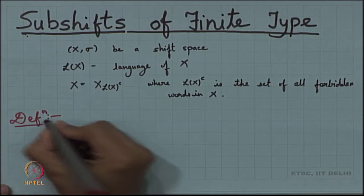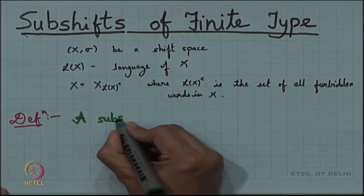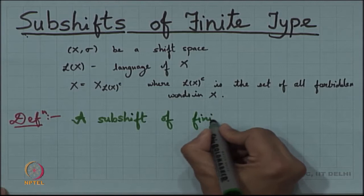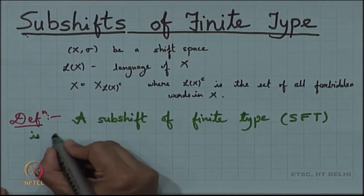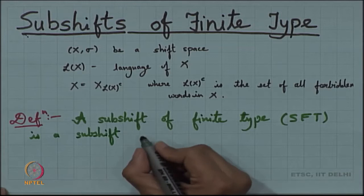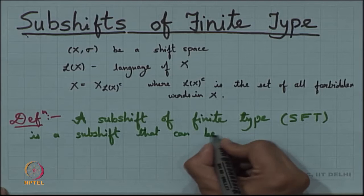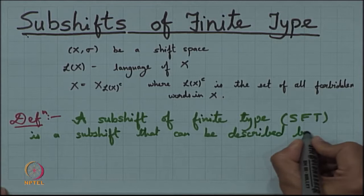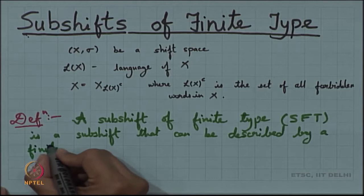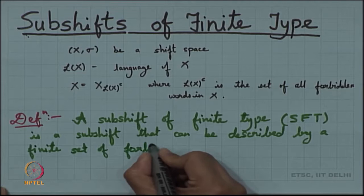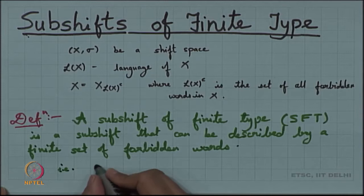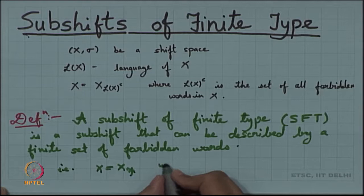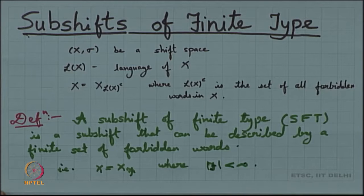A subshift of finite type — which we can also denote as SFT — is a shift space that can be described as a finite set of forbidden words. That means a subshift of finite type is that particular shift space where the set of forbidden words is finite.